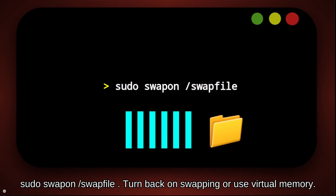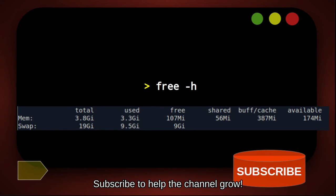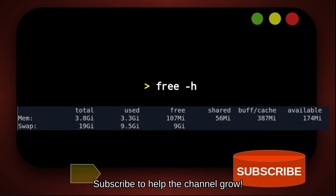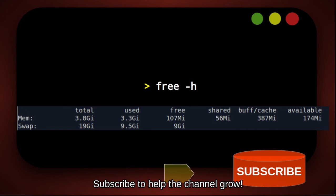sudo swapon /swapfile. Turn back on swapping, or use virtual memory. Type free -h for human readable format. We now have more memory available.